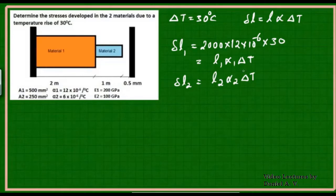Now we need to check what is going to be the value of total elongation if this member is free to expand. The total elongation ΔL will be equal to ΔL₁ + ΔL₂.